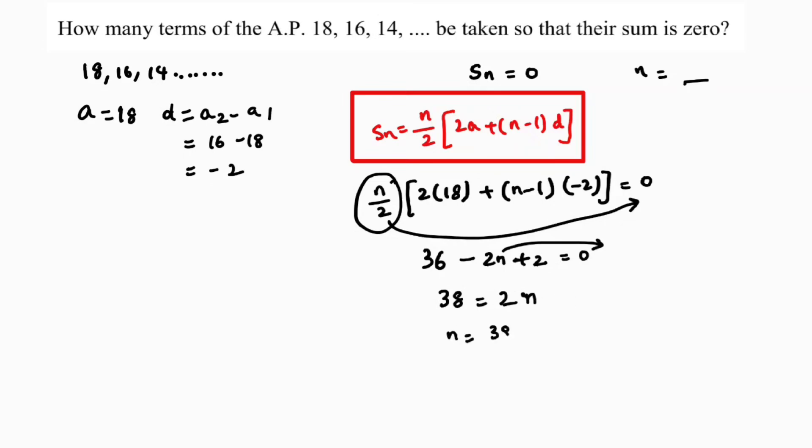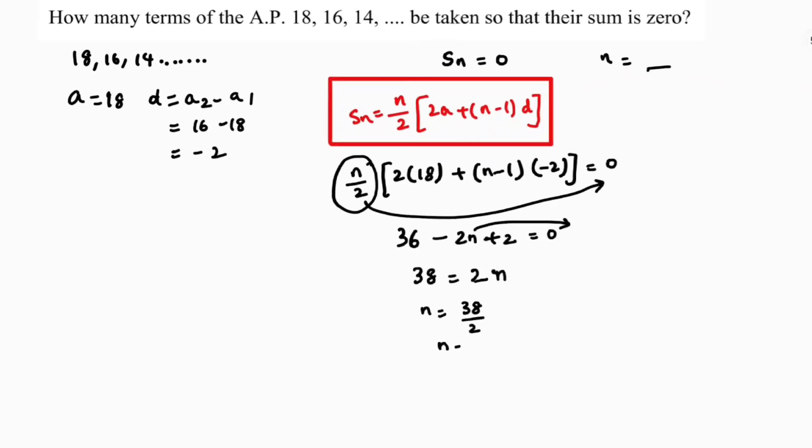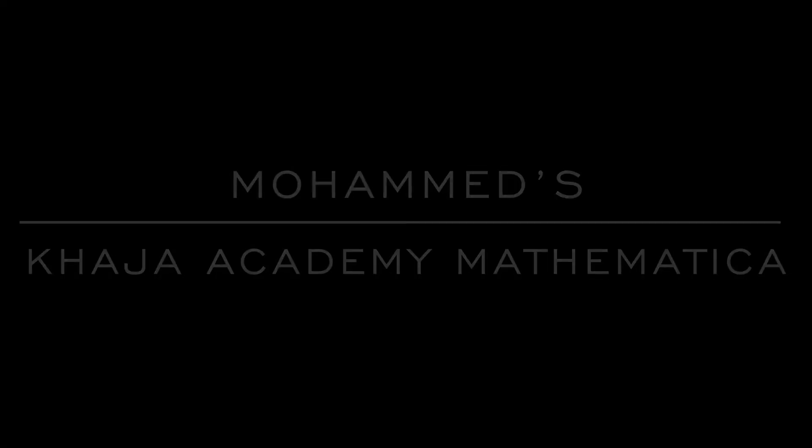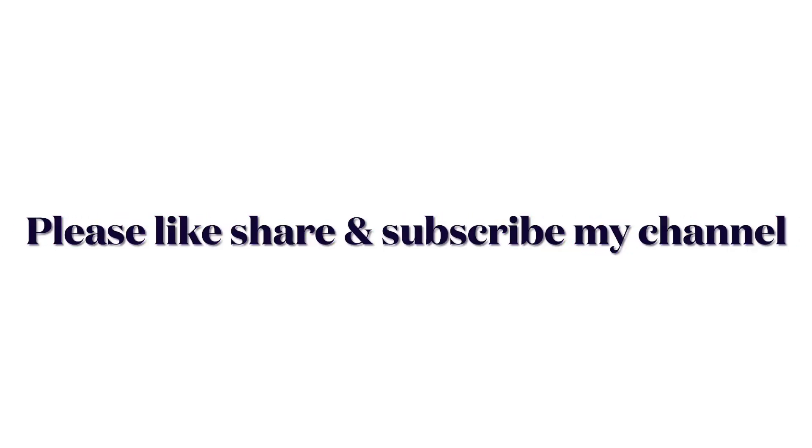N equals 38 by 2, so N equals 19. So the number of terms, how many terms of the AP should be taken? The sum of 19 terms is 0.